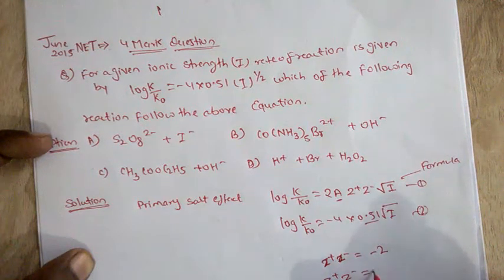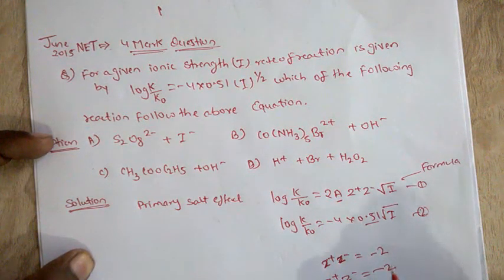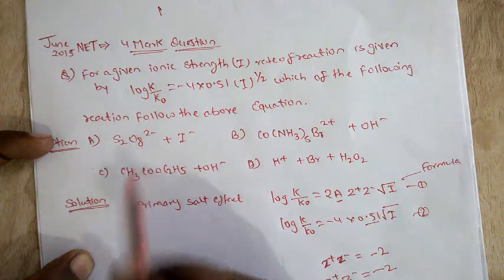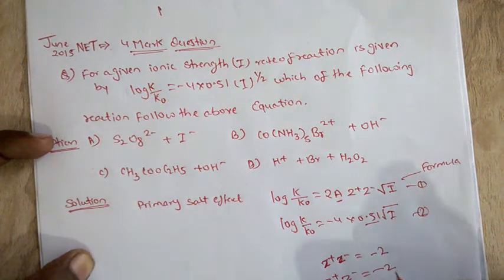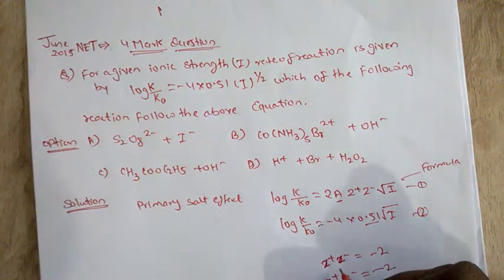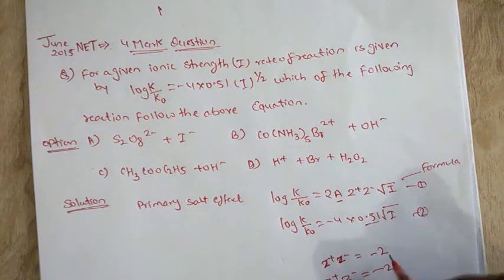So z+ times z- equals minus 2. This means you have to find the compound containing species where the product of z+ and z- equals minus 2.